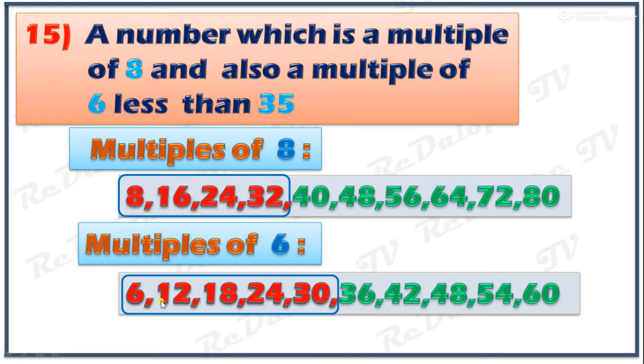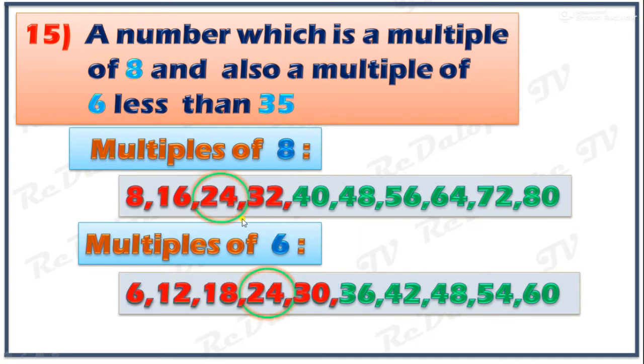Listing the numbers: multiples of 8 — 8, 16, 24, 32; multiples of 6 — 6, 12, 18, 24, 30. The common number is 24. So the answer is 24.